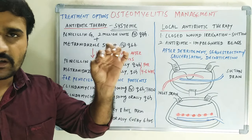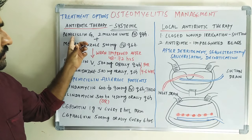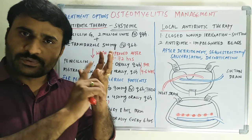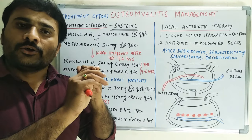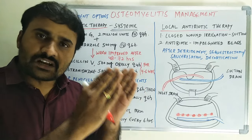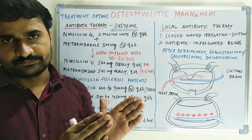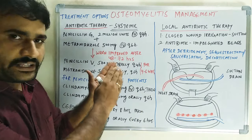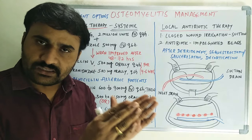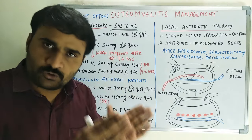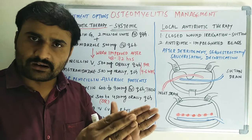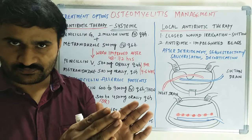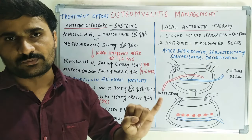The first and foremost antibiotic is penicillin G. The first principle is that you have to give intravenous antibiotic therapy to be most effective. The antibiotic therapy should be intense — that is, high doses — and prolonged, meaning you have to give it for 4 to 6 weeks. This is the most important principle.